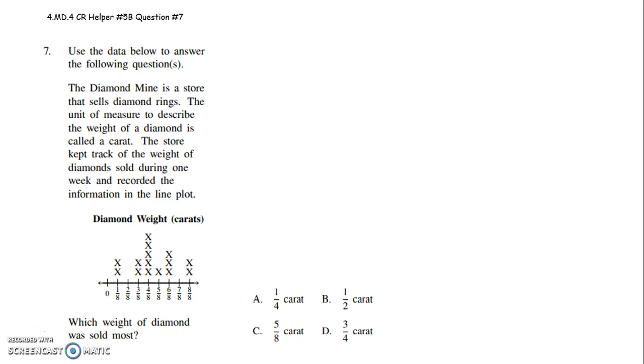The Diamond Mine is a store that sells diamond rings. The unit of measure to describe the weight of a diamond ring is called a carat. The store kept track of the weight of diamonds sold during one week and recorded the information in a line plot.